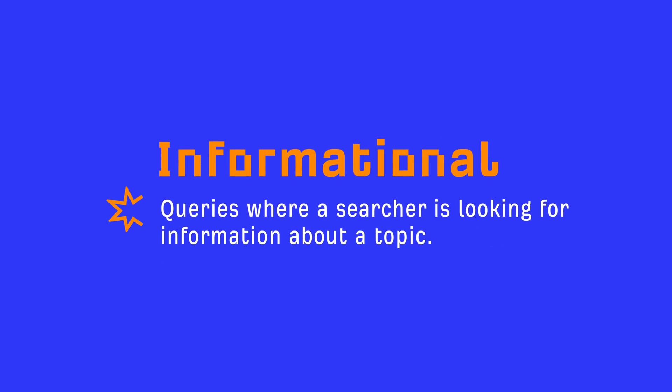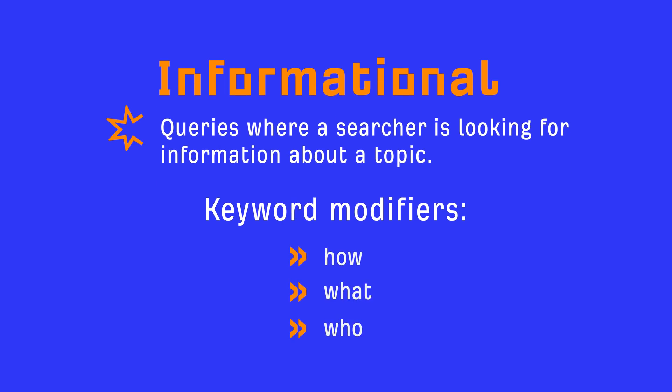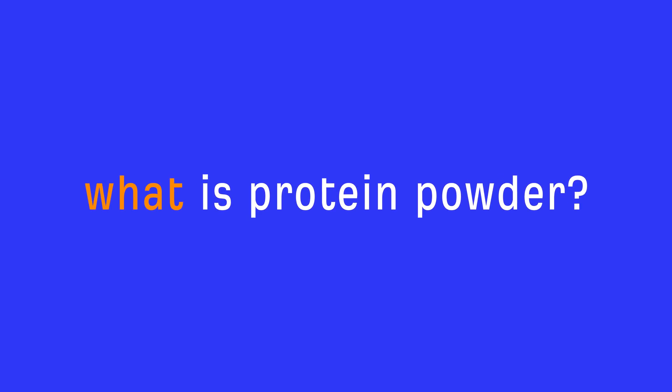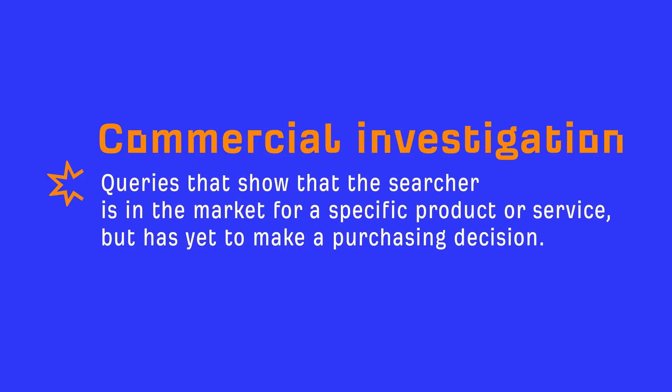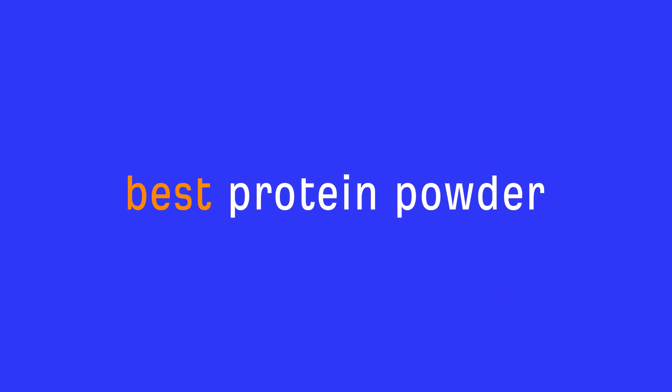Informational queries are ones where a searcher is looking for information about a topic. These usually contain words like how, what, and who — so something like 'what is protein powder' would be informational. Commercial investigation queries show that the searcher is in the market for a specific product or service but hasn't made a purchasing decision yet, so they're looking for comparisons. These queries often include modifiers like best, versus, and review — so 'best protein powder' would be an example.